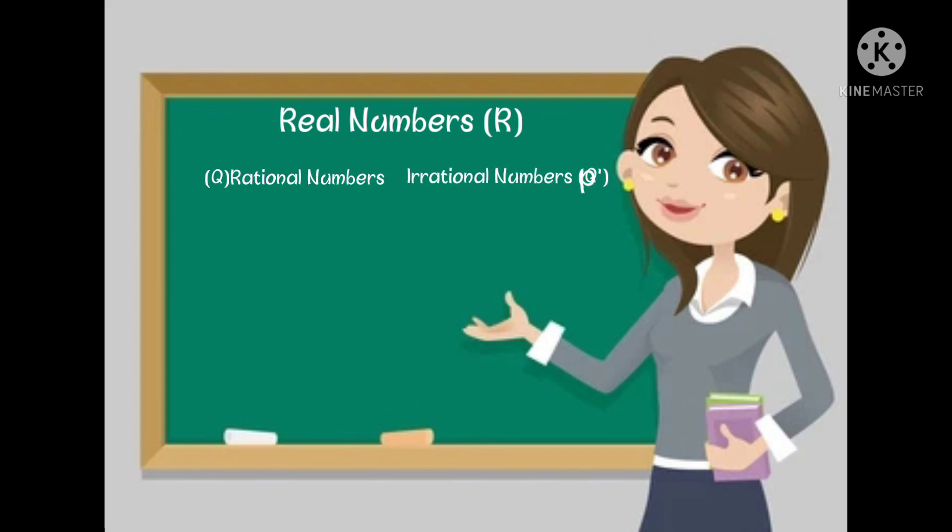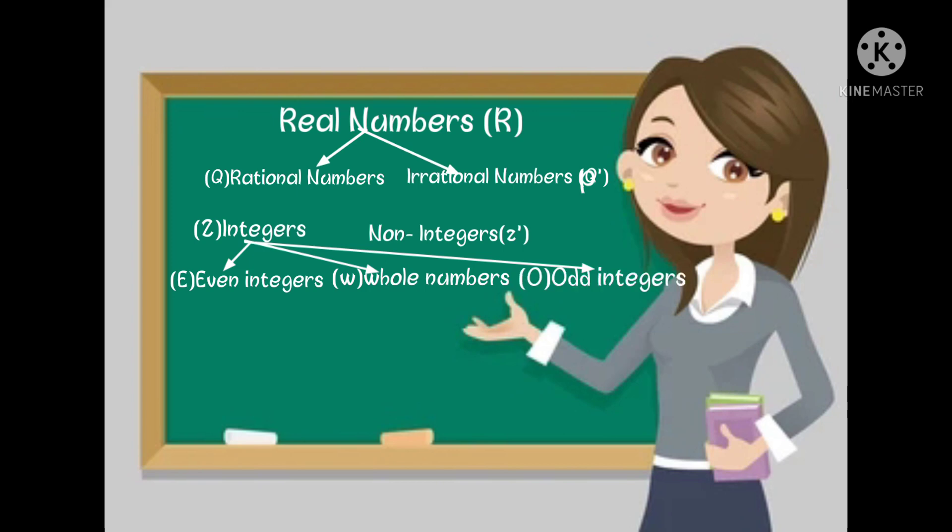Rational numbers are broadly classified into two types: integers and non-integers. Integers are broadly classified into three types: even integers, whole numbers, and odd integers. Whole numbers are broadly classified into two types: natural numbers and prime numbers.